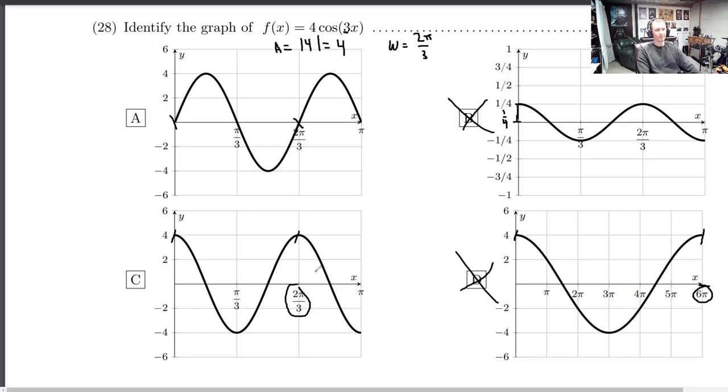Now which one's cosine? Well, we're just going to pick a point and we're going to see. What is cosine of 0? Cosine of 0 is 1, which means we should be at a height of 4 at the very beginning. Here we're at 4. Here we're at 0.